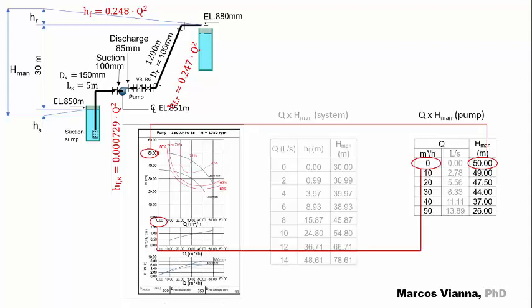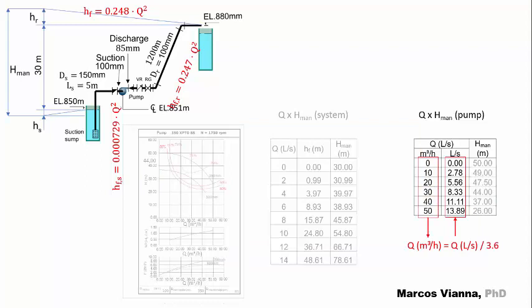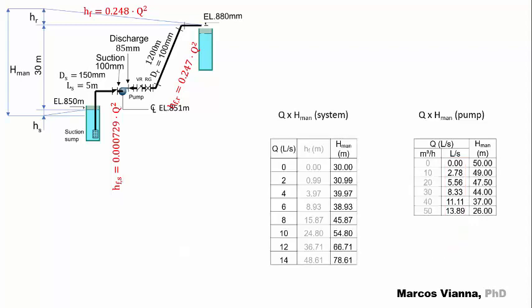Now, we draw another table containing the values of Q and H extracted from the pump curve. Let's transform the Q values from cubic meters per hour to liters per second. Now, we have the data to draw the characteristic curves of the pump and the system.